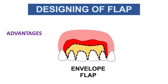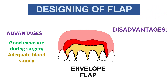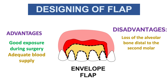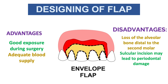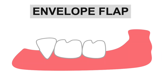Advantages of the envelope flap: good exposure during surgery and adequate blood supply. Disadvantages include loss of alveolar bone distal to the second molar due to wound dehiscence — they are most commonly used in lower third molar extraction, so there is risk of bone loss distally. The circular incision may also lead to periodontal damage, gingival recession, pocket formation, and loss of attached gingiva.